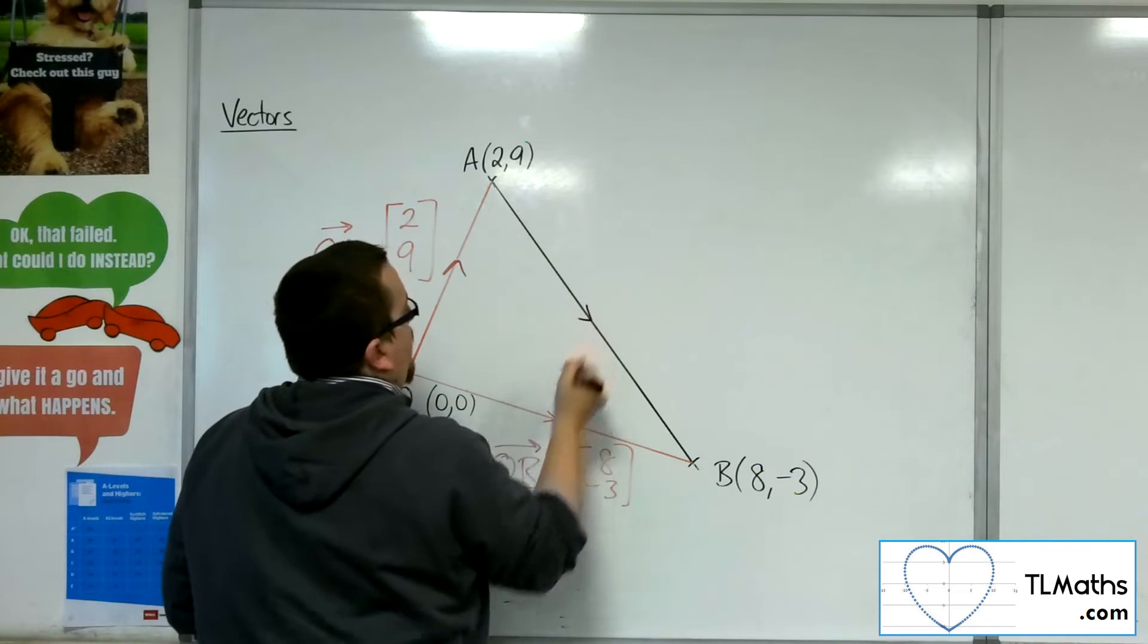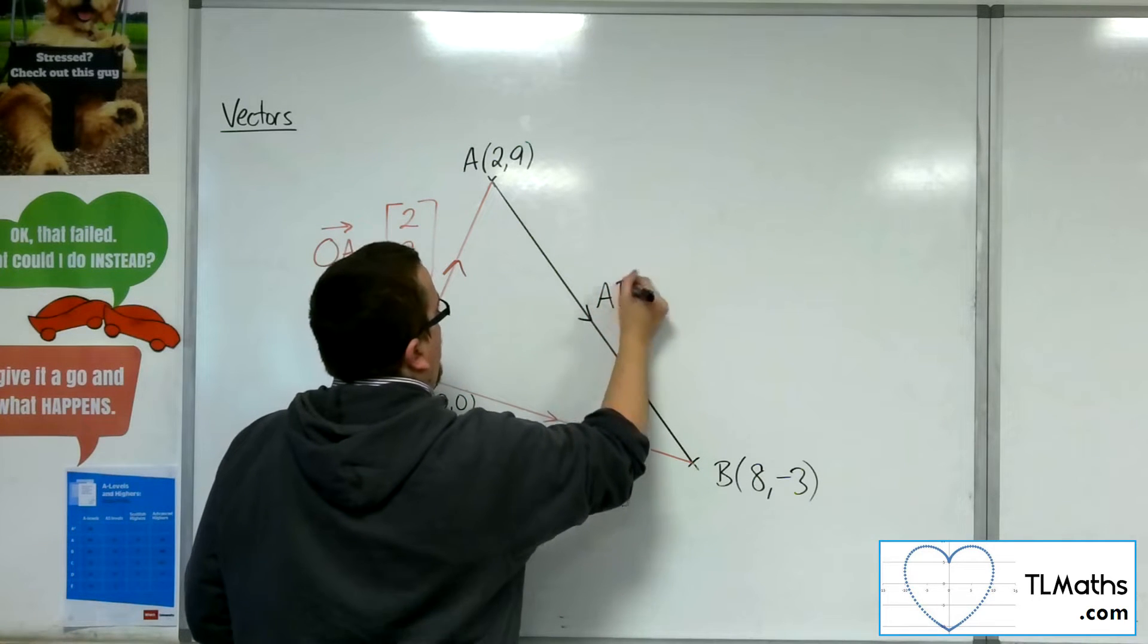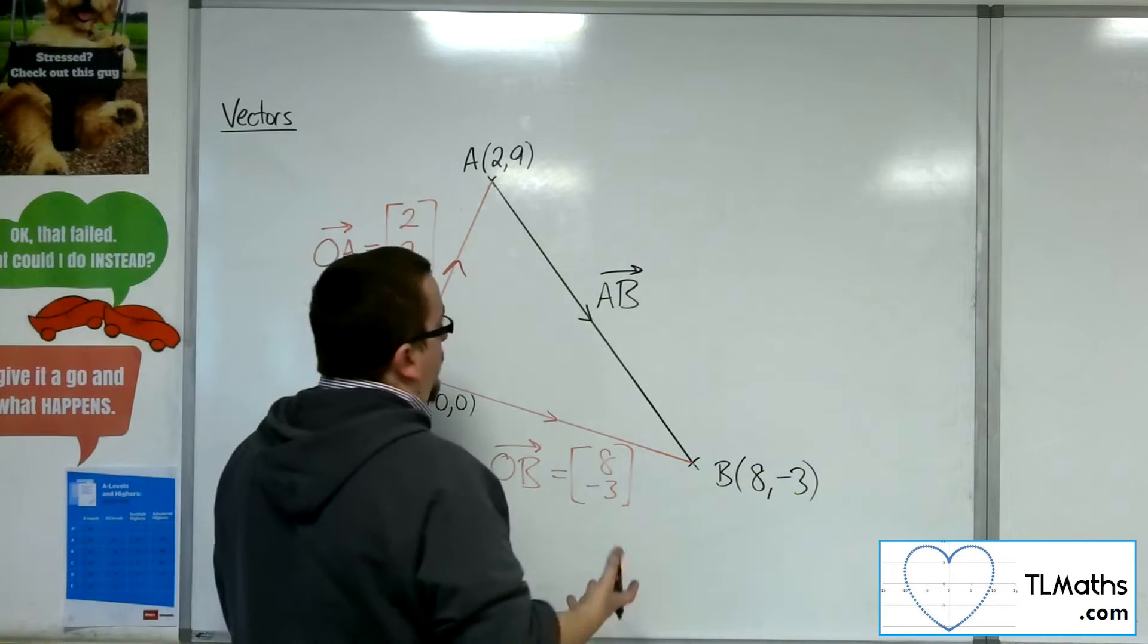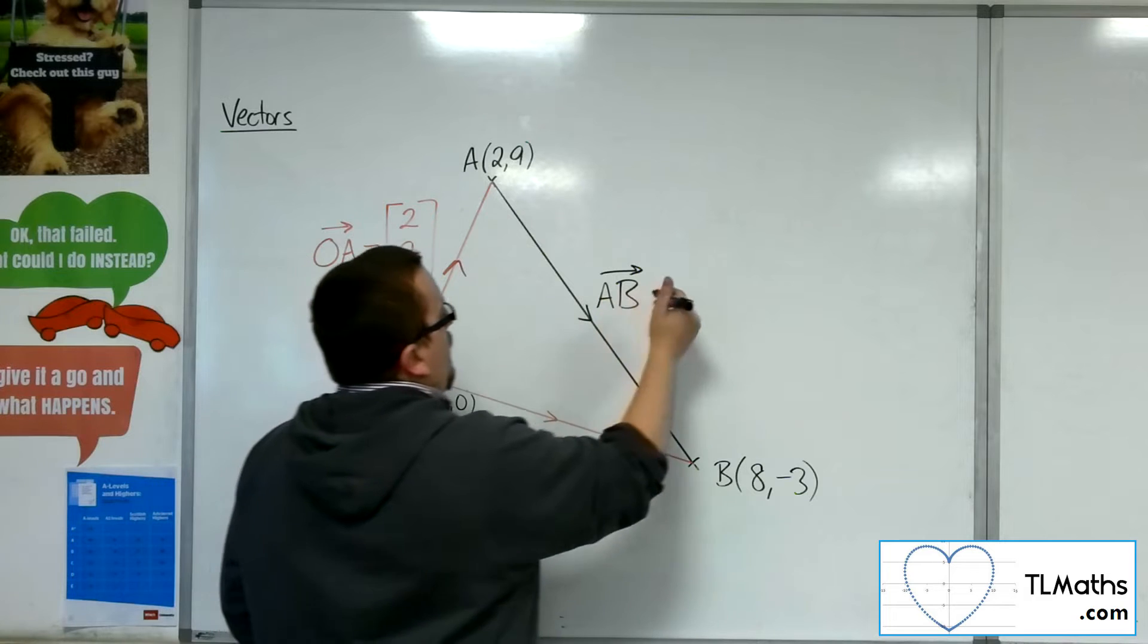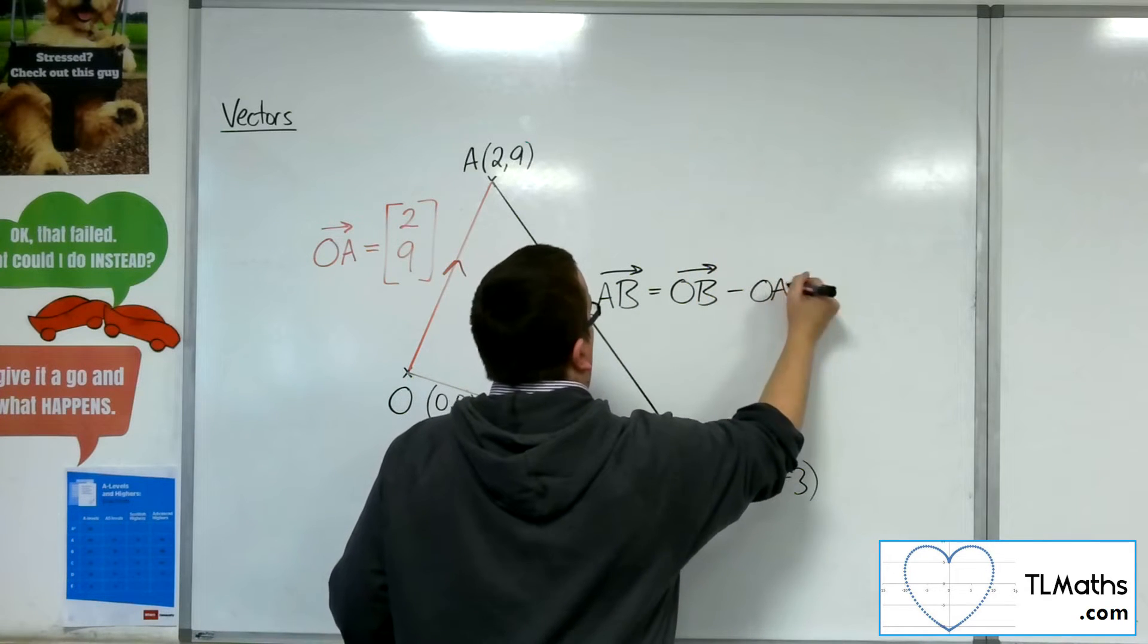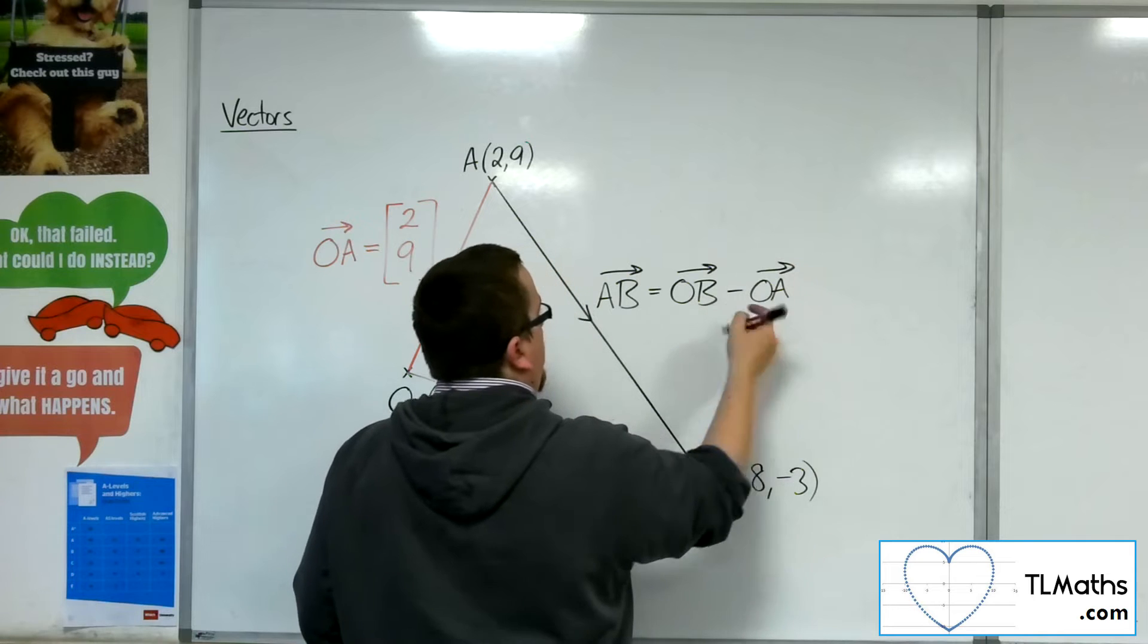So if I found the vector AB, then I can find the vector's length using Pythagoras. So A to B is B minus A, or the position vector of B, take away the position vector of A.